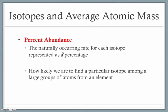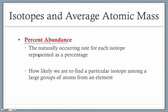What we haven't considered is that not all isotopes occur at the same rate — we have more of one and less of another. We can track this with something known as percent abundance: the naturally occurring rate of each isotope represented as a percentage, or how likely we are to find a particular isotope among a large group of atoms. This boils down to stability — some isotopes are more stable and therefore occur more naturally, while less stable ones occur less frequently.